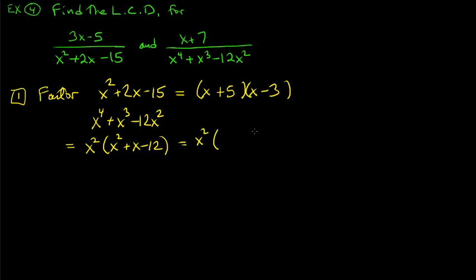Now x squared + x − 12 can be factored as a product of two binomials. We need two numbers that multiply to −12 and add to +1: that's +4 and −3. So x squared + x − 12 factors as (x+4)(x−3).